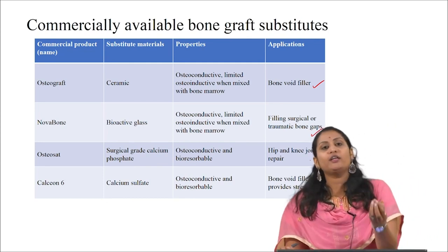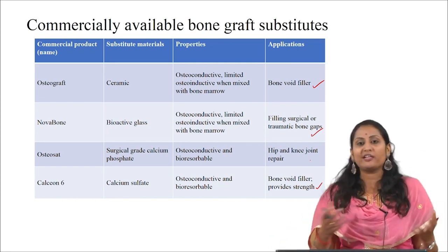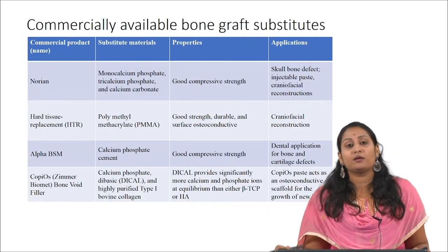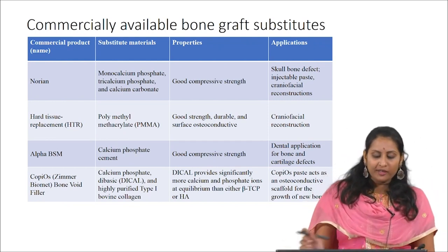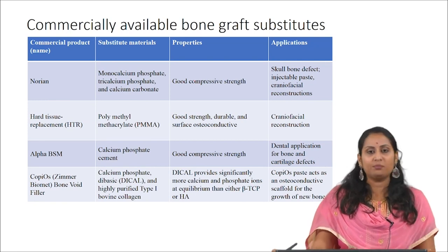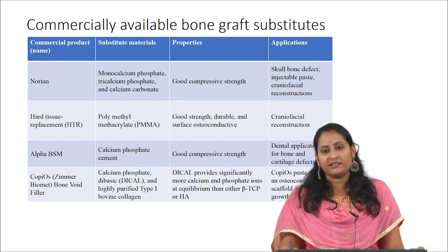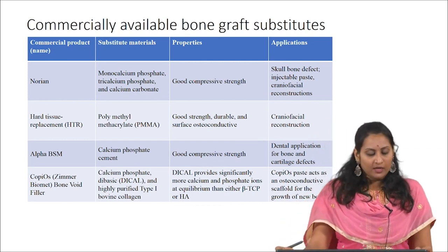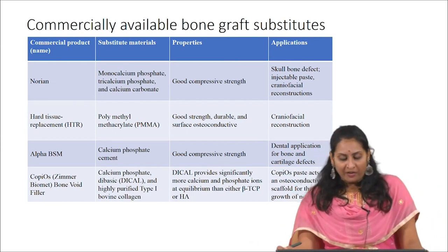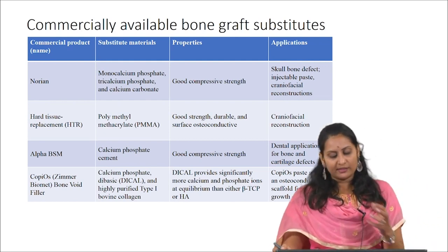Bone itself is a composite material made of inorganic hydroxyapatite — which belongs to the ceramic family — and an organic collagen matrix, which is why ceramic-based materials are heavily used in bone graft substitutes. Norian is prepared from monocalcium phosphate, tricalcium phosphate, and calcium carbonate; it provides good compressive strength and is used as an injectable paste for skull and craniofacial reconstruction. Another product uses polymethylmethacrylate (PMMA), a synthetic polymer, offering good strength and surface osteoconductivity for craniofacial reconstruction.